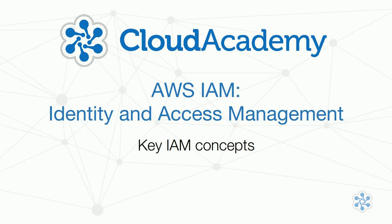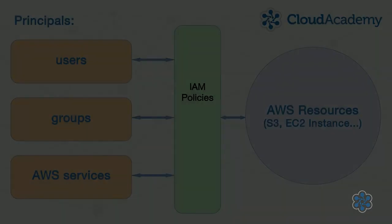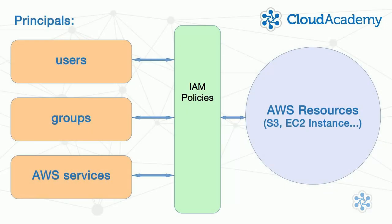IAM policies precisely define relationships between principles and resources. A principle, by the way, in AWS terms is a user, a group, or an AWS service like an EC2 instance. By resource, in this context, we mean an S3 bucket and its contents, or an EC2 instance and the data and services it provides.